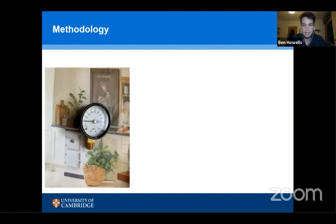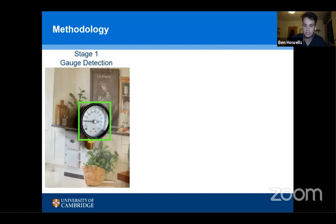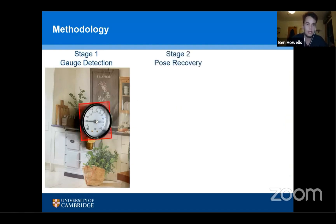So this is how we tackle the task. We have an image and the first thing we want to do is detect where the gauge is using a bounding box — we call this stage one of our system. You'll notice that the gauge is captured from a non-face-on angle, so to account for perspective distortion effects and parallax error, we want to recover pose.